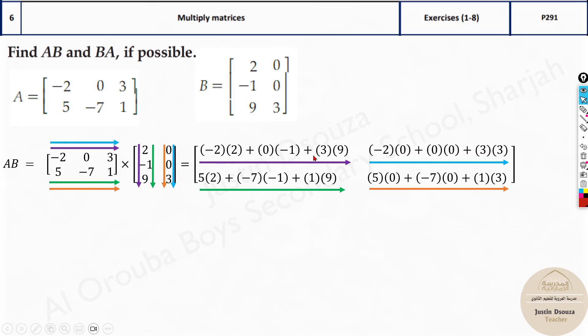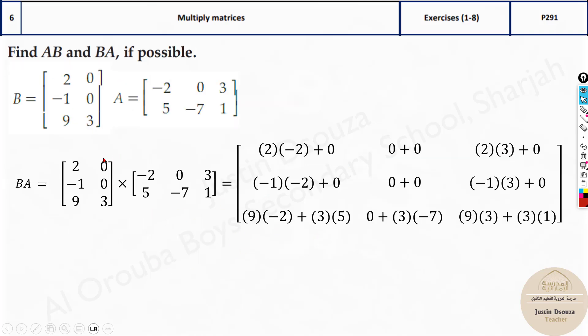Now you just can solve this up. You can put in the calculator and solve it. You get this answer. This is the multiplication. Same way you can do for the B and A. It's the first row with the first column. First row with the second column.